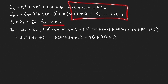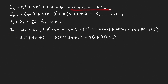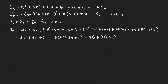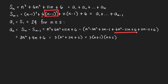We get a sub n equal to the difference of the two expressions. Subtracting and canceling gives us a sub n. Expanding: n cubed minus 3n squared plus 3n minus 1, then 6 times n squared minus 2n plus 1 gives 6n squared minus 12n plus 6, then 11n minus 11, and plus 6. After simplification, the n cubed terms cancel to 0.